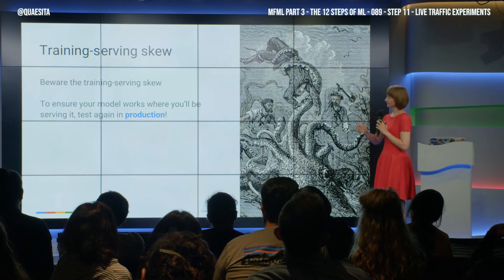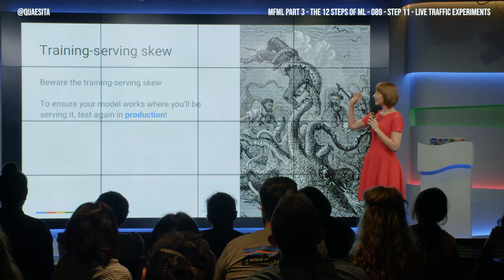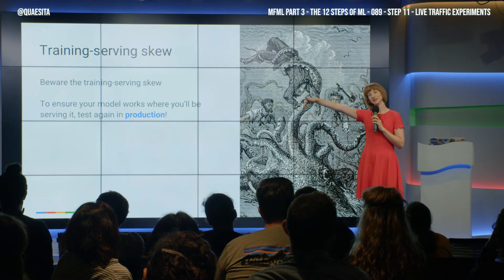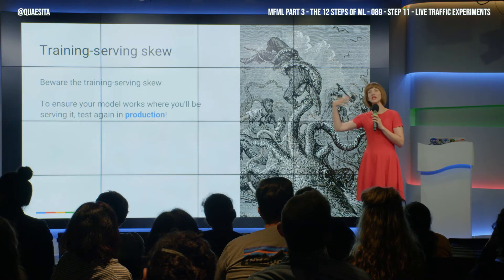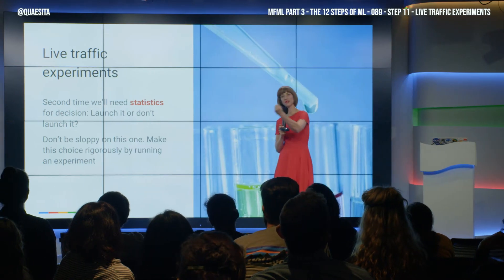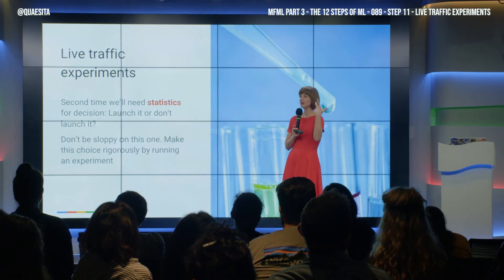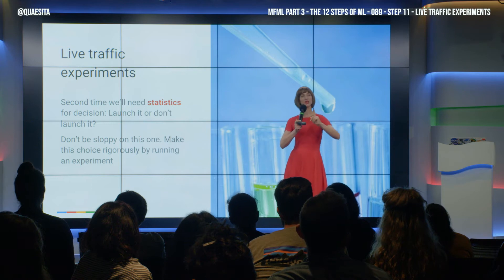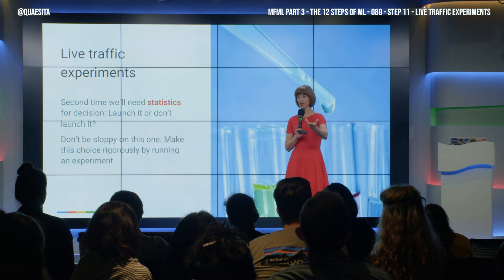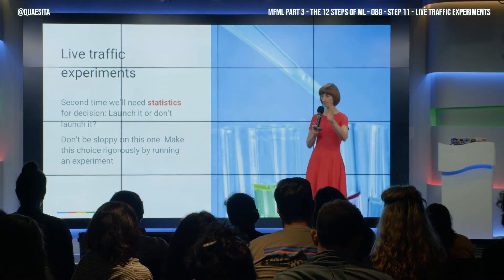And consider doing an experiment. Remember this monster of training-serving skew. You need to check that it works well in the world where it's going — you'll only know if you test it in that world. See what its impact is on that world. What an experiment lets you do is compare the impact of this thing versus another alternative. Maybe you have a next best way to solve this problem — now you can race the two and see if yours is better, and if so, how much better. Because it's always nice to add to your performance reviews: we also saved this many dollars per whatever period.